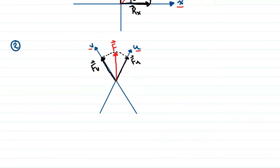We know that these two vectors fu and fv are vector projections. But are these two vectors also vector components? As mentioned, components means that if we add these two vectors they should give us vector f. If we add them using the head-to-tail fashion, will they give us vector f? The answer is no — if we take vector fv and place its tail on the head of vector fu, it won't give us vector f.